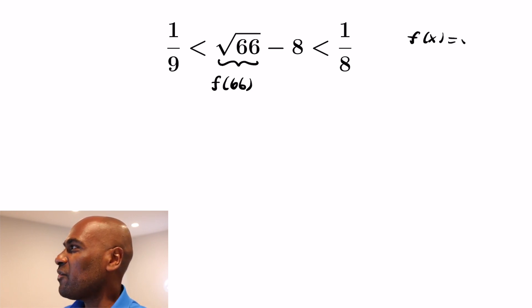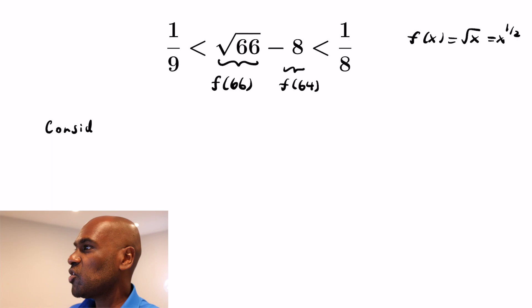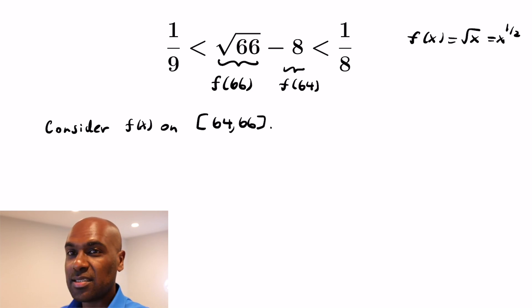So we're going to let f(x) be the square root of x so that we have √66 is f(66) and 8 then is f(64) because the square root of 64 is 8. So we have the difference of f(66) and f(64). So we're going to consider this function f(x) = √x on the closed interval from 64 to 66. f is continuous on this interval and is differentiable on the open interval (64,66).